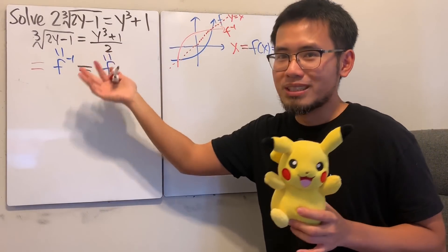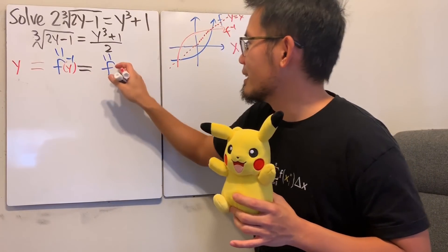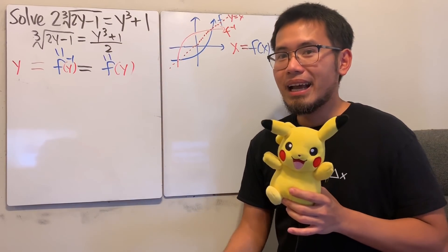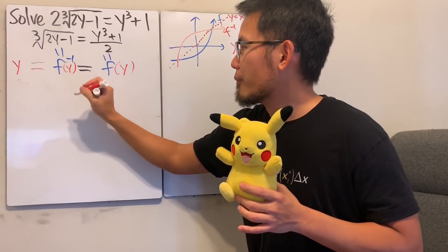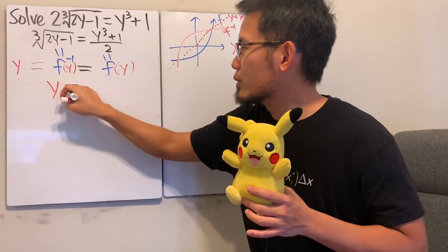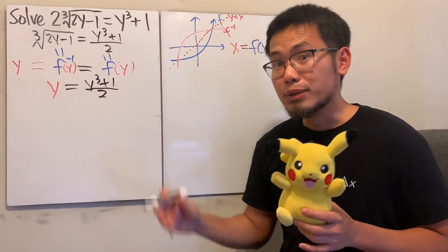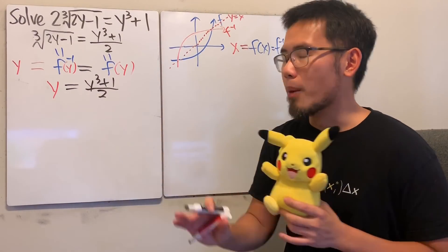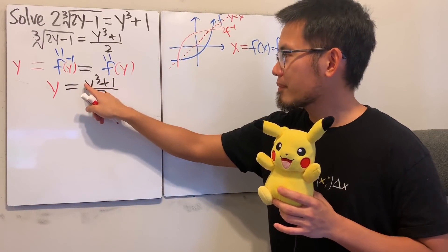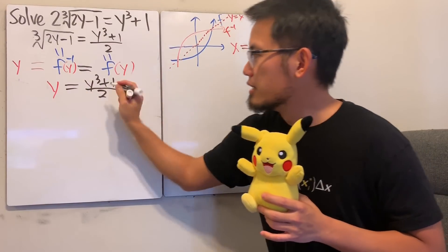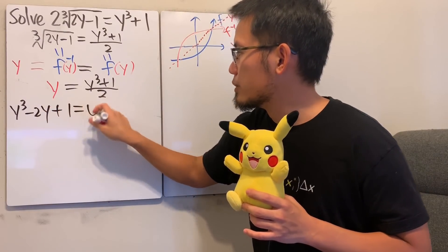They like to use y for the input here, so we'll use y. This means we just have to solve y equals y to the third power plus 1 over 2. This reduces the question tremendously. Now, multiply 2 on both sides and bring everything to one side: we get y to the third power minus 2y plus 1 equals 0.